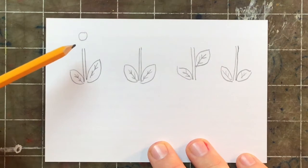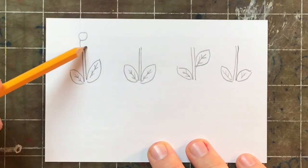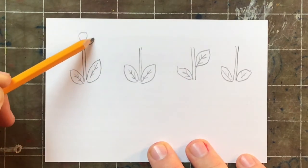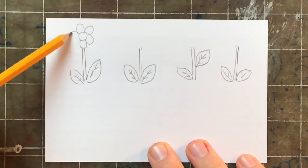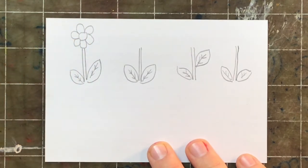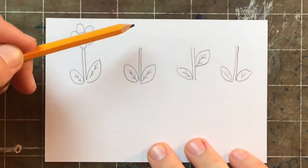After I'm done with my leaves, I'm going to add the top of the flower, the blossom. I'm going to start with a circle on this one. And then I'm going to use curvy lines to go around it. There we go. That's a classic flower shape.